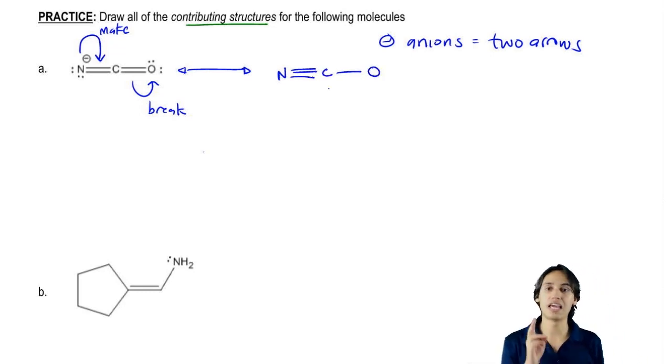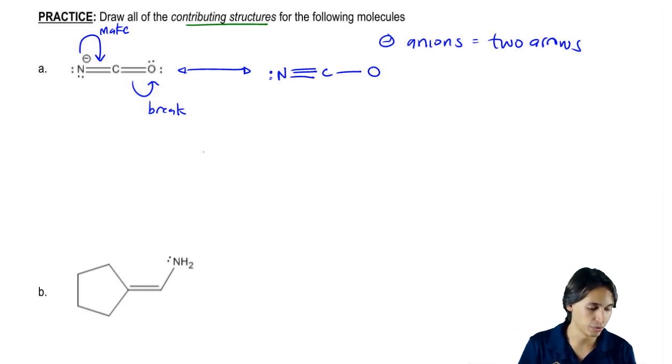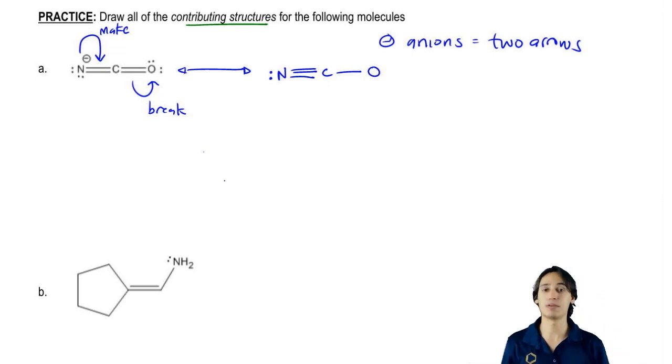Now nitrogen already gave up one of its lone pairs to become a triple bond. So that means it only has one lone pair left. Carbon has the same amount of electrons as before, it's just arranged a little differently.